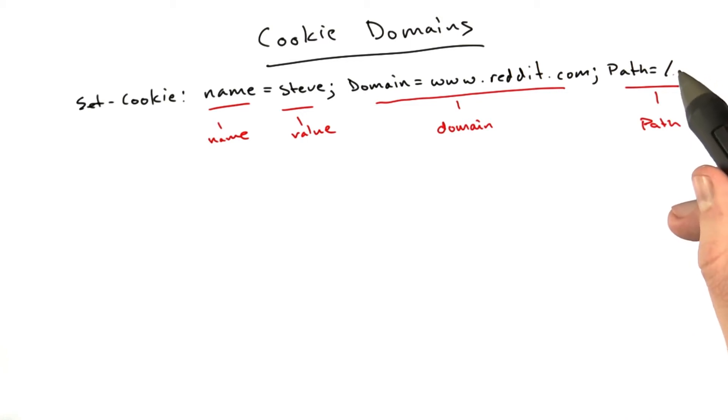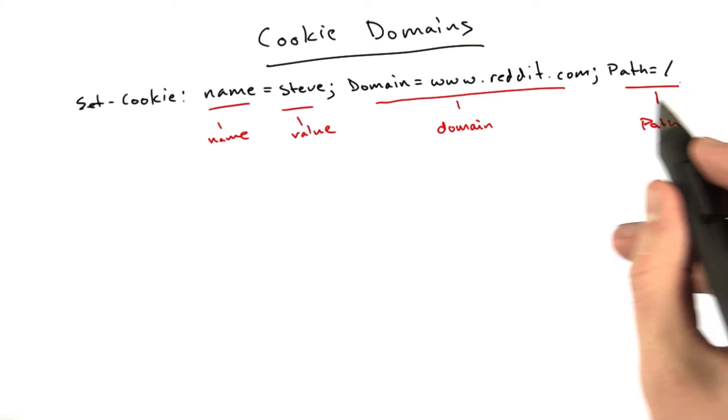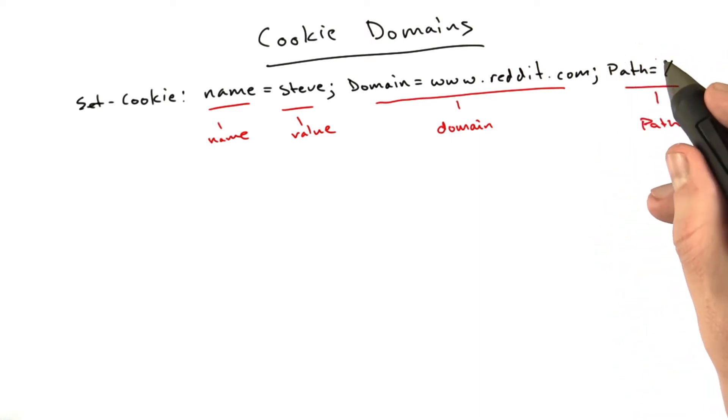The path is easier to explain. Basically, you can put whatever you want here, and in this case, this is the default path. If you don't specify a path, we just assume you mean slash, and this is actually the most common use case of cookies.